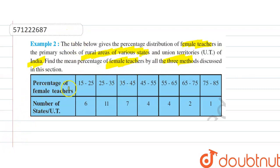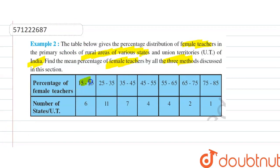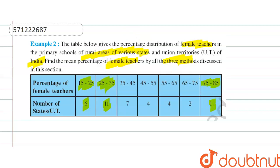The percentage of female teachers between 15 to 25 has 6 states, 25 to 35 has 11 states, and similarly up to 75 to 85 which has 1 state involved.